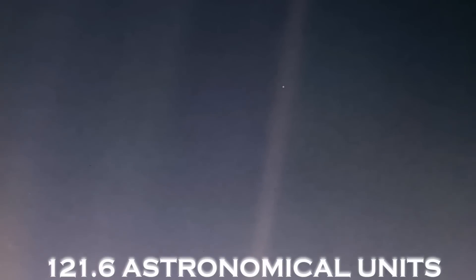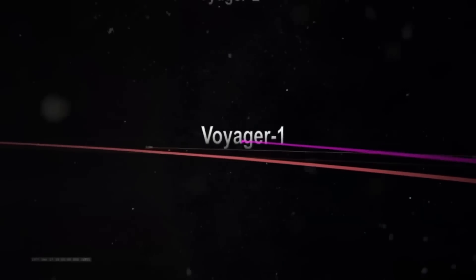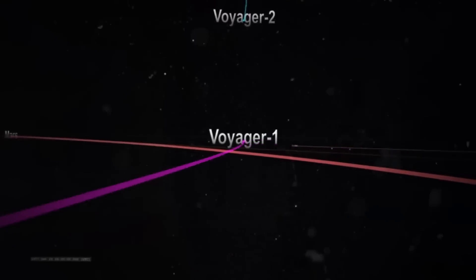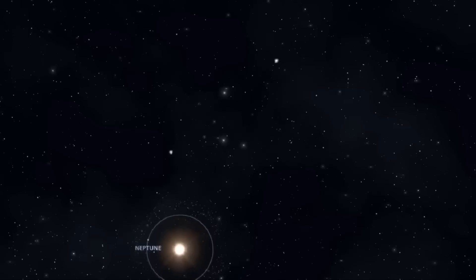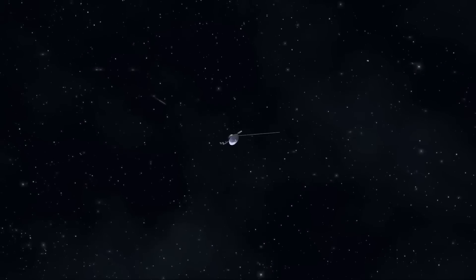On August 25, 2012, at a distance of 125.6 astronomical units, Voyager 1 crossed the heliopause. There were clear signs that it had crossed this boundary, such as the disappearance of high-energy particles from the solar wind, indicating that the rest of the solar wind had also been left behind.